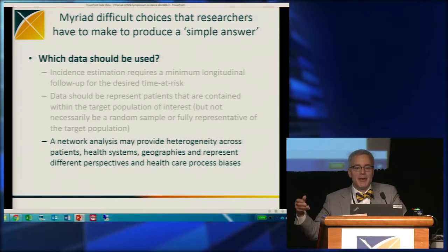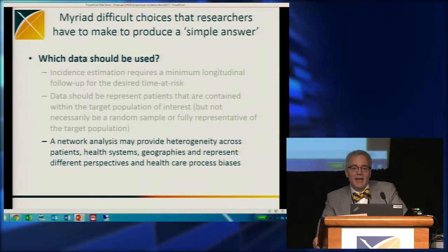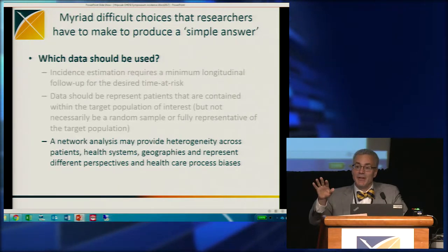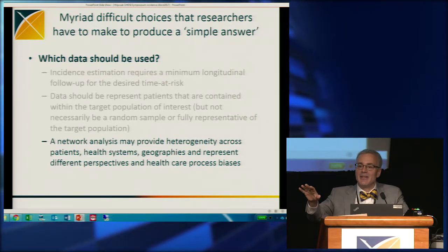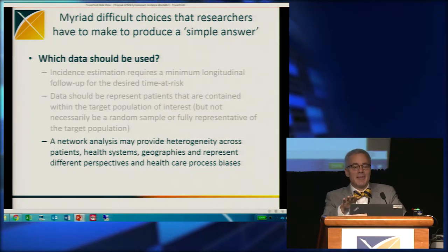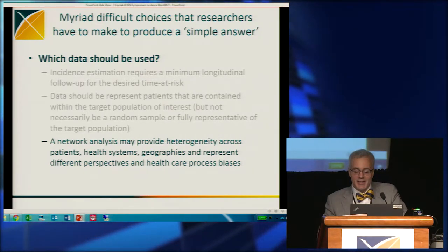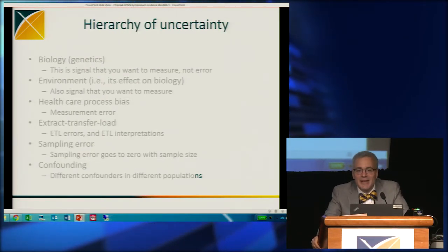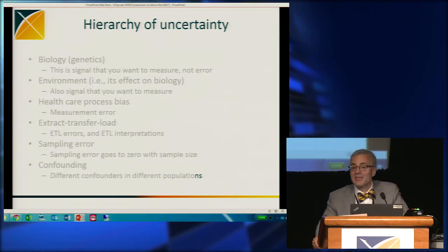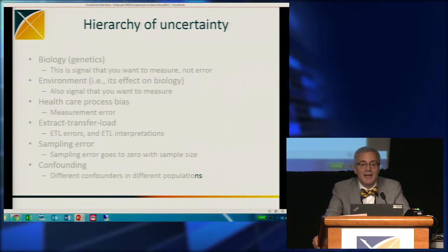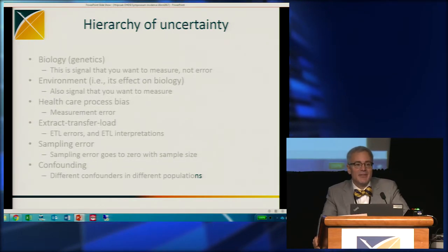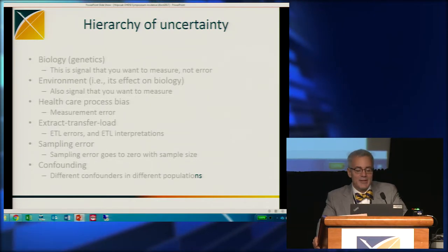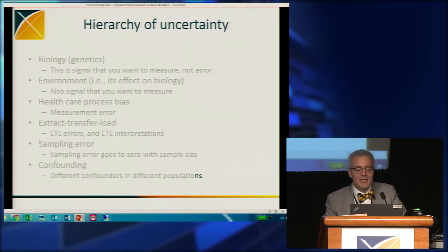What data should be used? This again comes back to using the data in the network and studying the heterogeneity across the data. It's not bad news that the Medicare database is mostly older people, because then I can see what happens there. I can see in a different database what happens with a younger population, and I can start to understand the differences between them. You can come up with a framework for a hierarchy of uncertainty — there are some forms of uncertainty I want to know about, like biological differences between people and environmental differences, and there's some I'm trying to get rid of, like ETL and software errors. And sampling error becomes vanishingly small, as I already said.